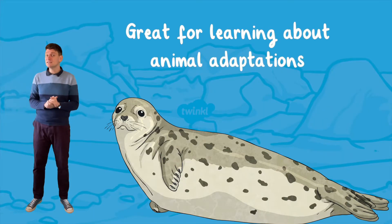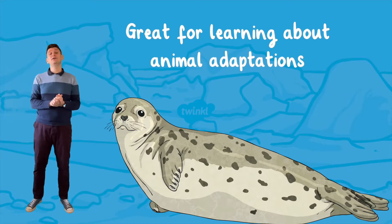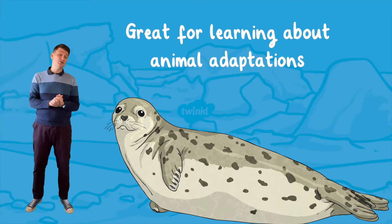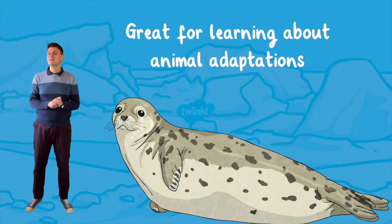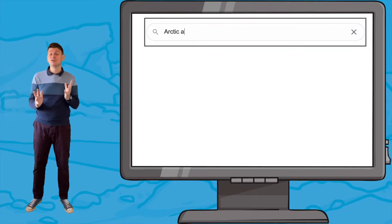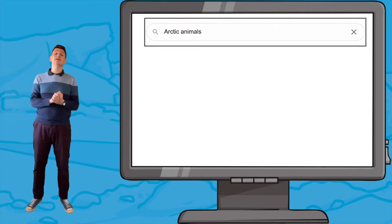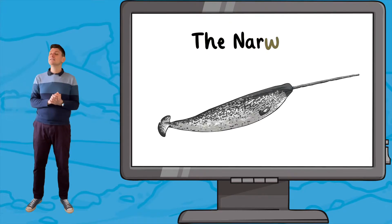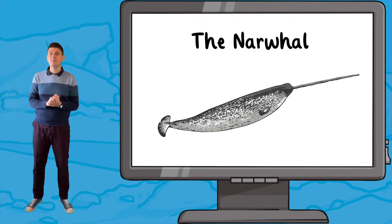The presentation is an ideal starting point for learning all about animal adaptations, such as why seals have developed a thick layer of blubber. As an extra activity, you could ask children to research other animals that live in the Arctic and to explain how they are adapted to their environment.